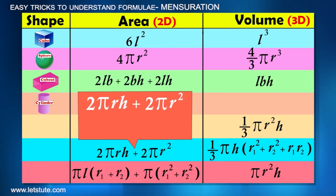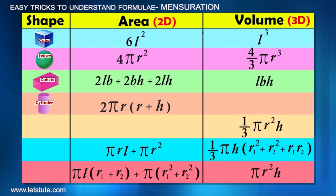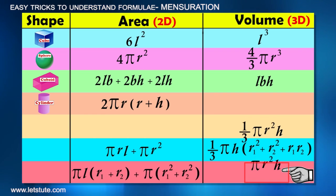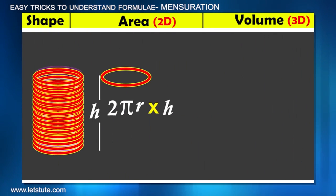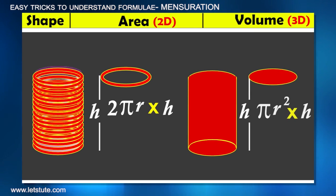And therefore totally it is 2πr(r+h). Can you figure out the formula for volume? Yes, it is πr²h: area of the base multiplied with height. Like we put rings to height h, similarly, if we put disks to height h, we get volume.